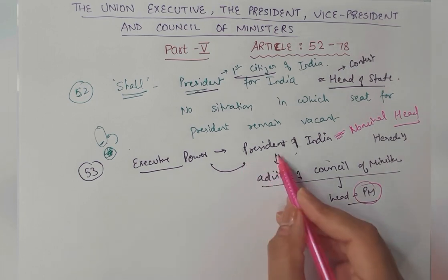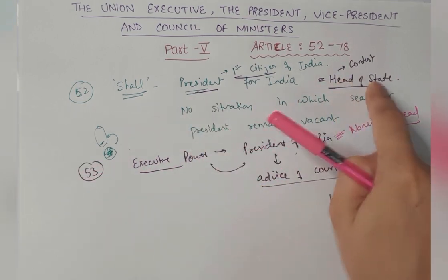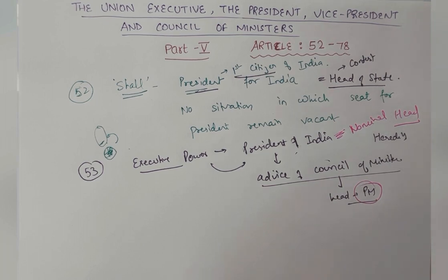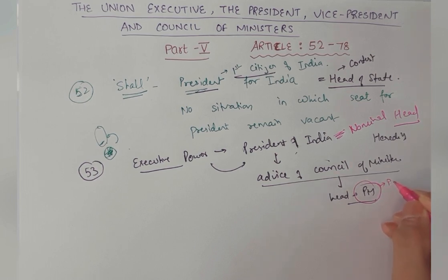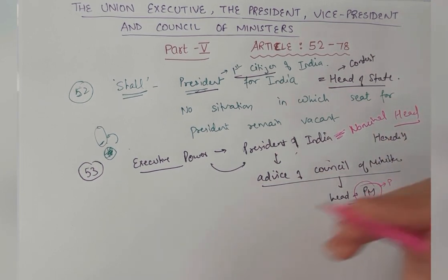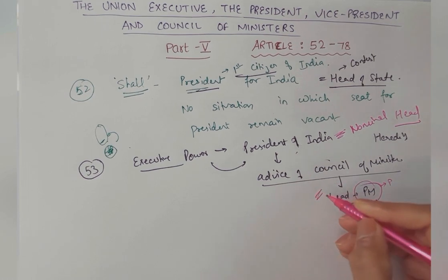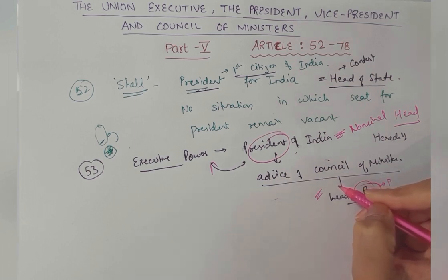Different names to remember: Who is the first citizen? President. Who is the head of the state? President. Who is the nominal head of the country? President. India has a parliamentary form of government — also called Prime Ministerial form. PM is the head of government; decisions are taken by the PM with the Council of Ministers. Those decisions are then executed under the name of the President.